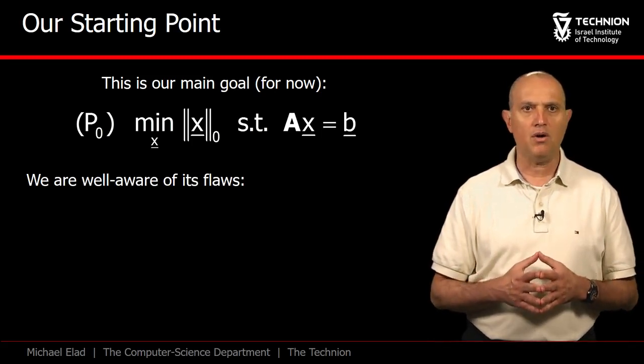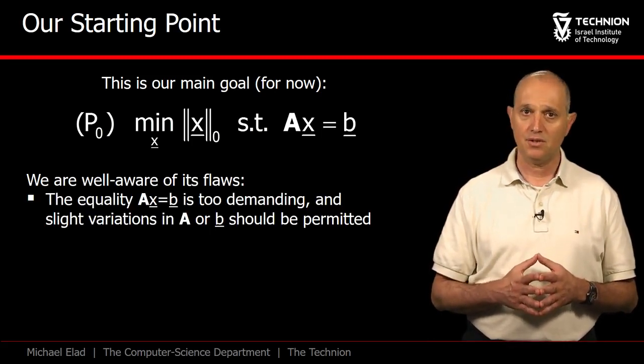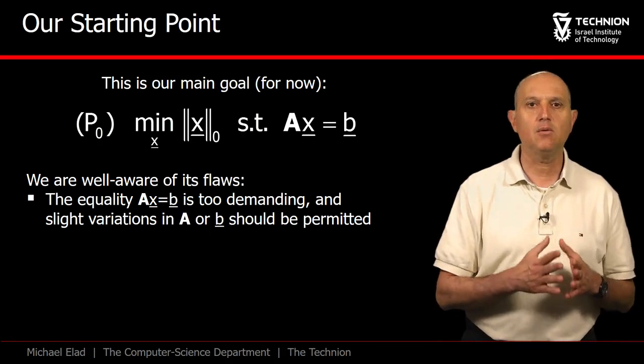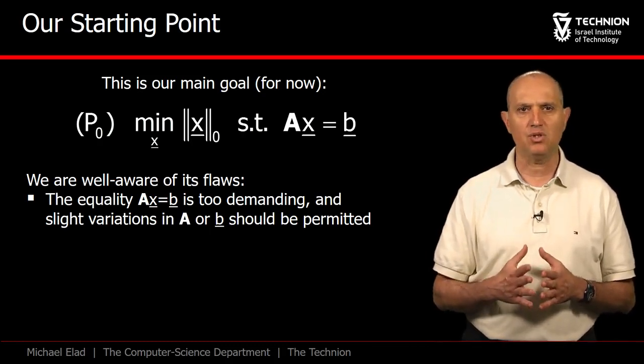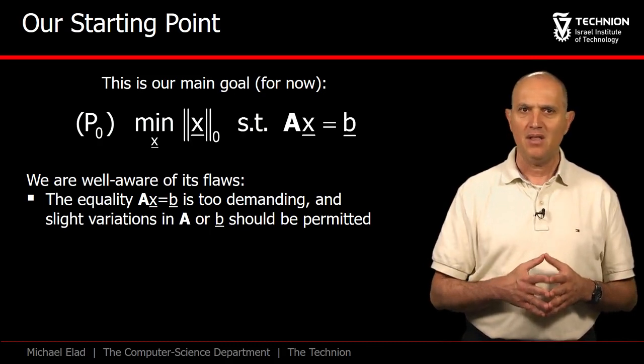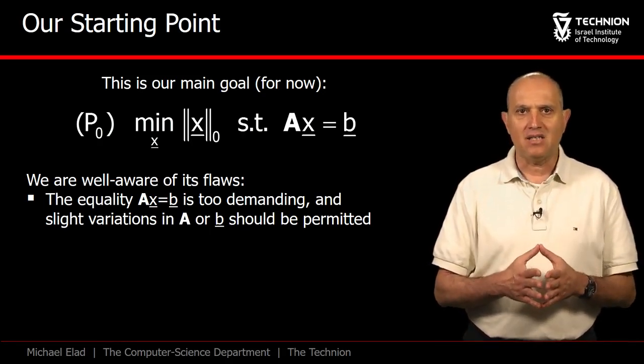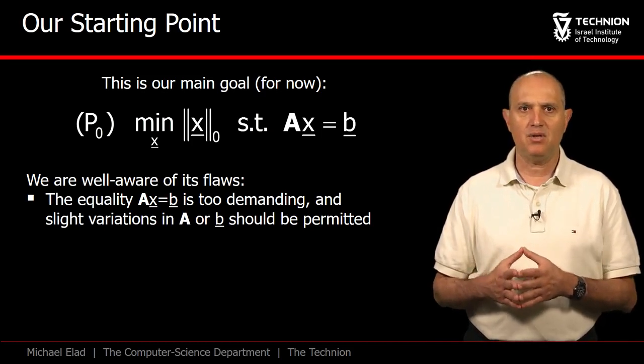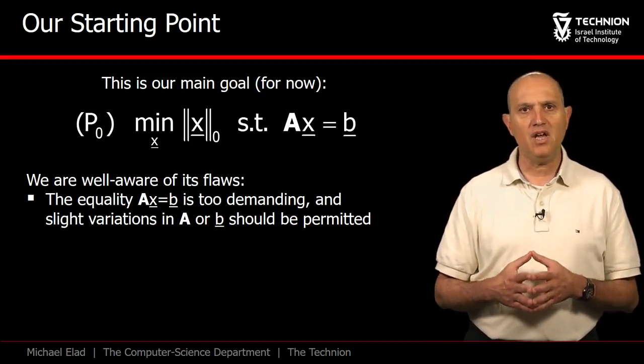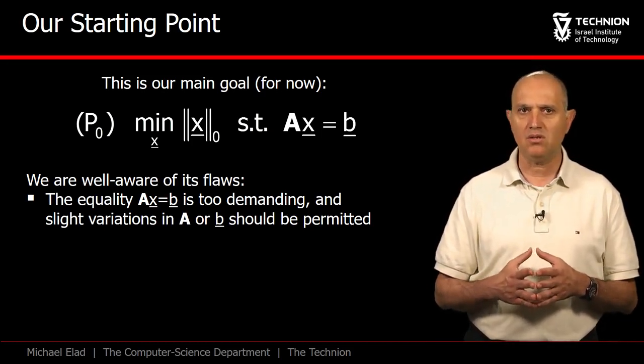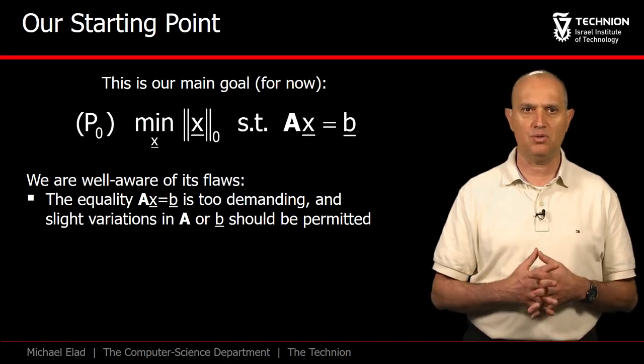While we pose it as our ideal goal to address, we are well aware of its flaws. First, the requirement AX equals B is unforgiving to small perturbations in either A or B. That is to say, if indeed the system AX equals B has a very sparse solution, a small deviation in B, for example, will cause the new system to lose the sparse solution it had.